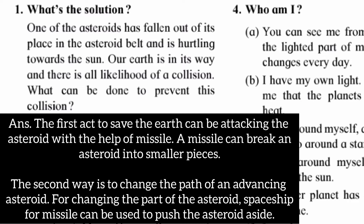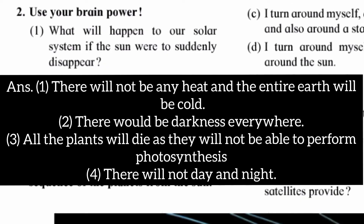For changing the path of the asteroid, a spaceship or missile can be used to push the asteroid aside. Question two, use your brain power: What will happen to our solar system if the sun were to suddenly disappear?